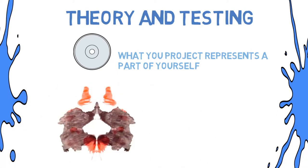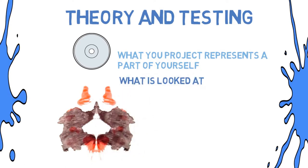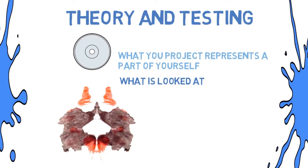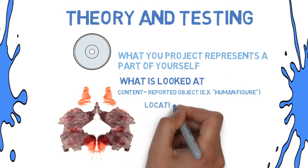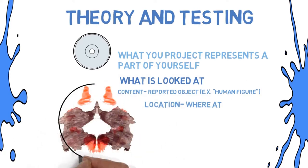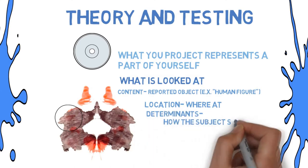The person being tested holds a card out in front of them and describes what they see. A test administrator looks at several categories for each card, including the content — the actual objects the subject reports, such as a human, animal, or nature. The next category looks at the location: does the subject use the whole card, the white space, an uncommon detail, or a common part of the card?